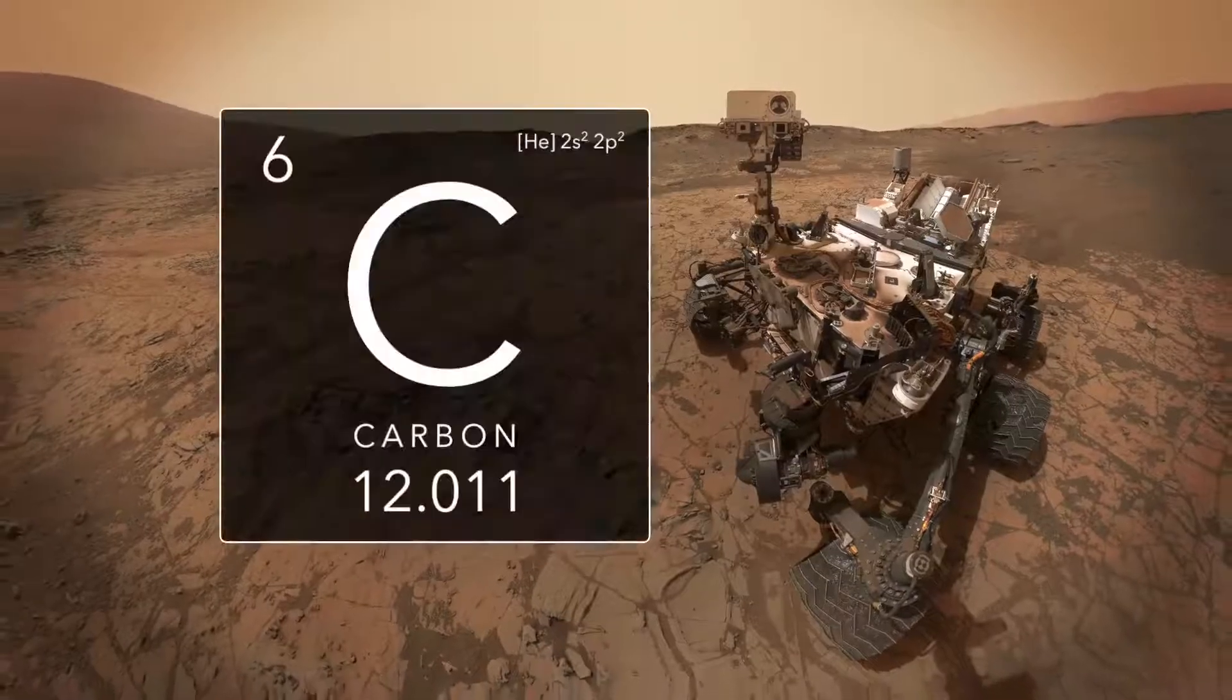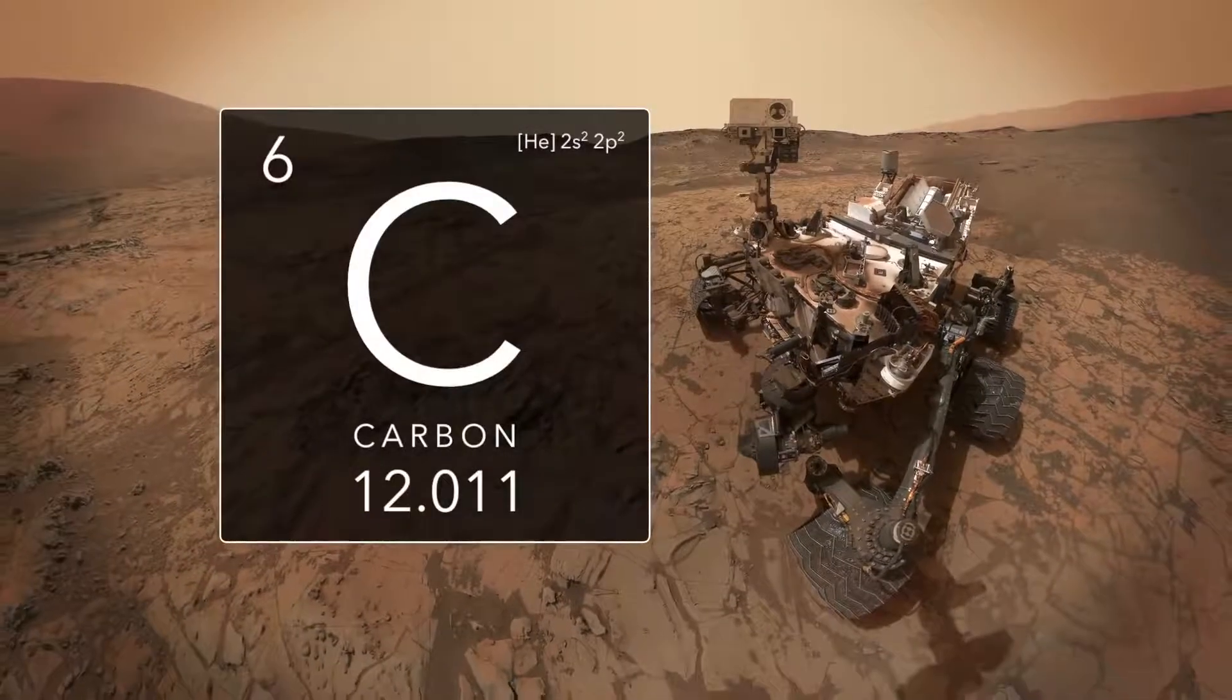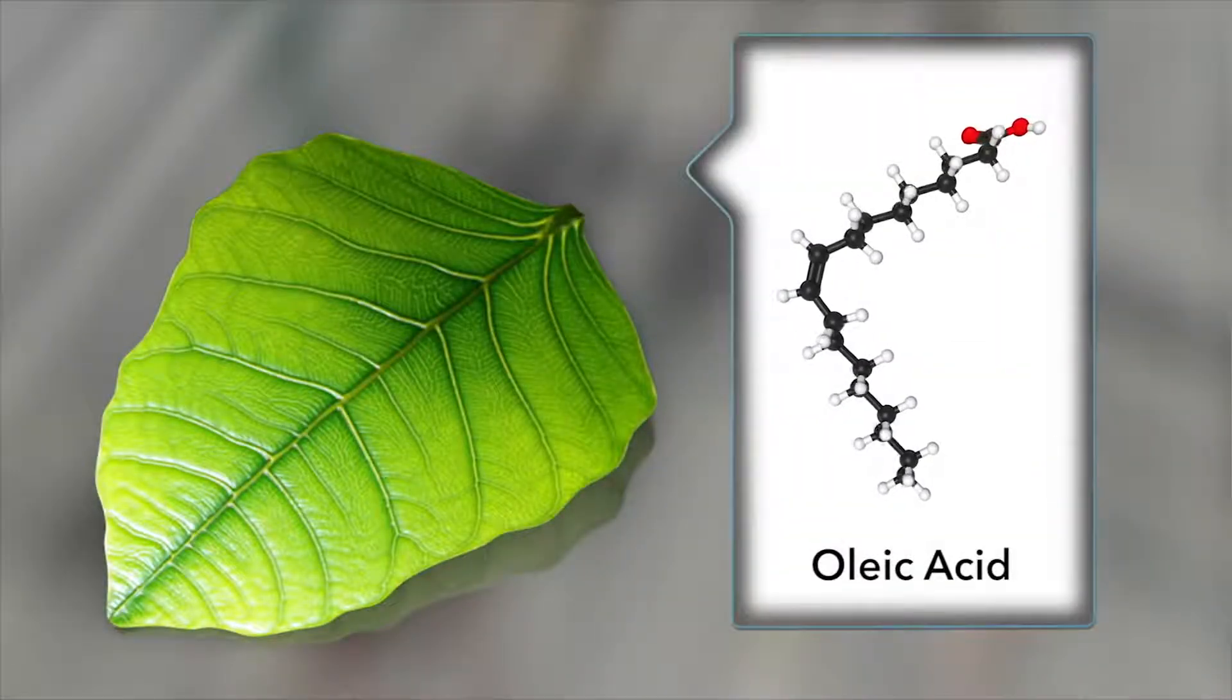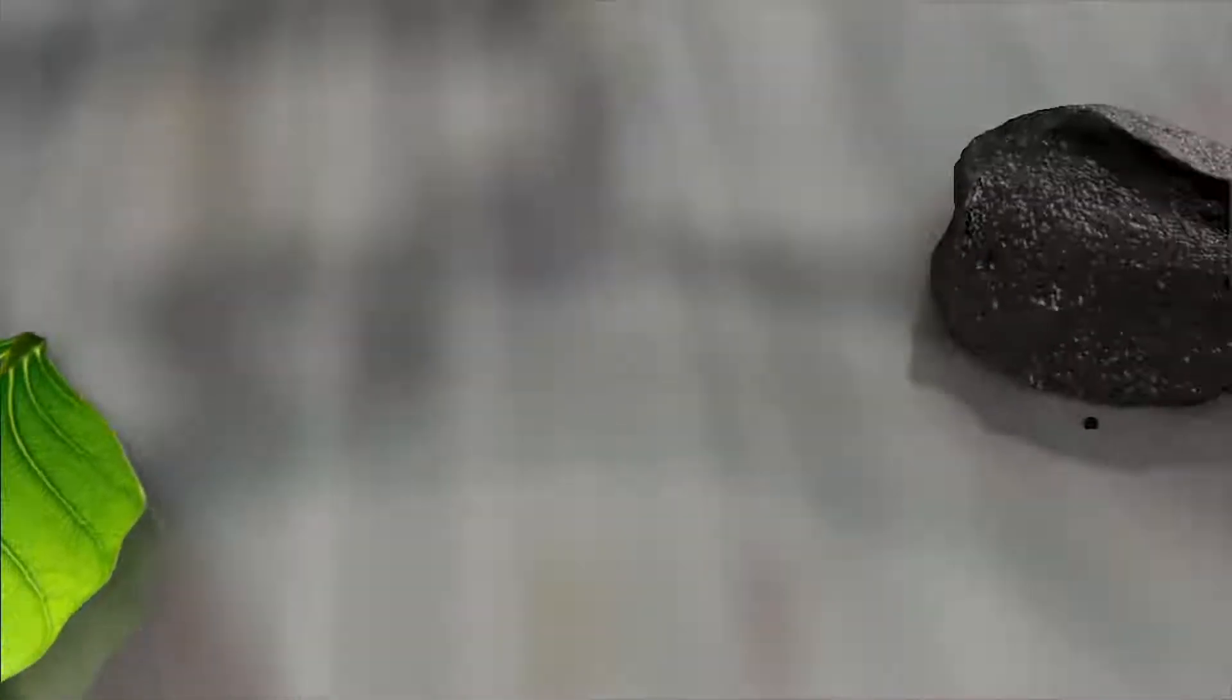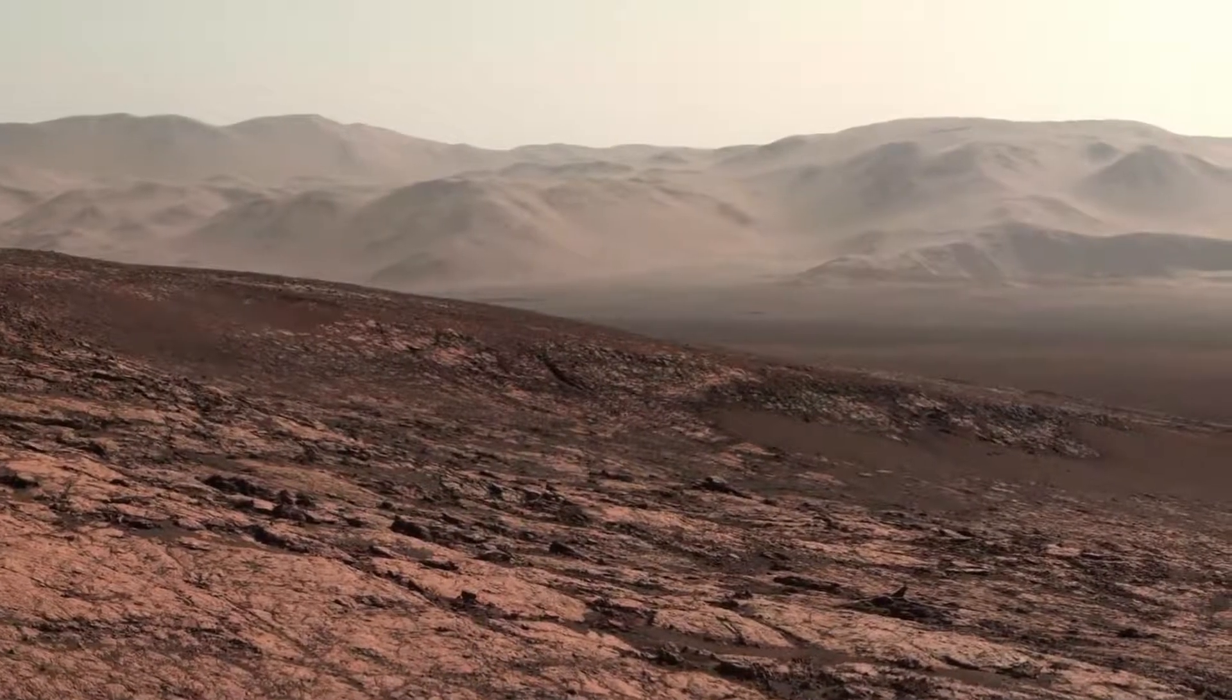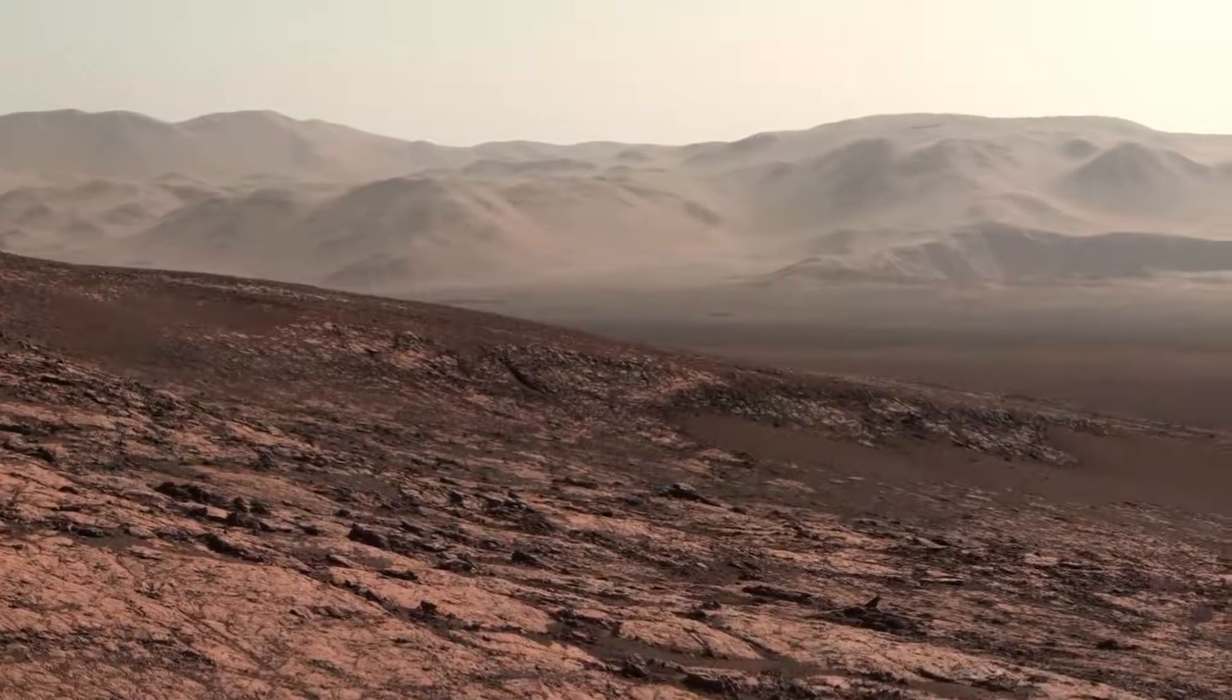The Curiosity rover is investigating these questions by looking for organic molecules containing carbon. Organic molecules are the backbone of all life on Earth, though they can also come from non-living sources. Today, the surface of Mars readily destroys organics, making them difficult to detect.